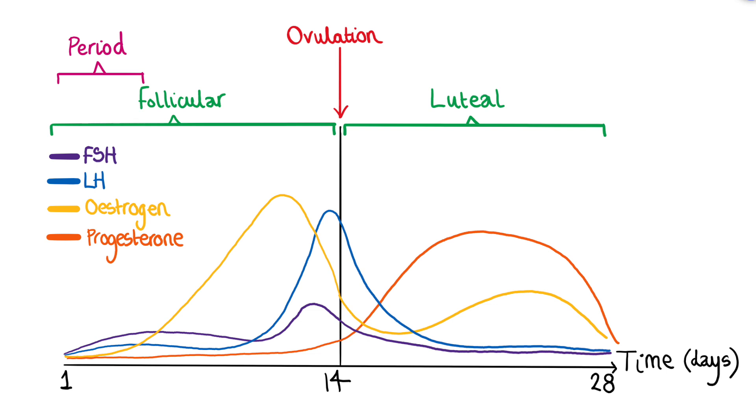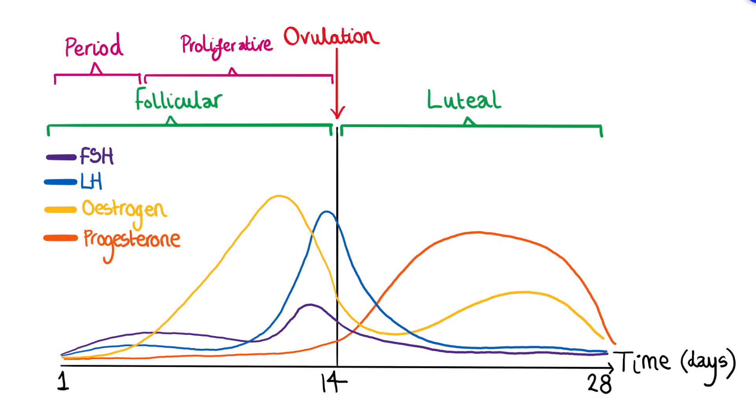That's the ovarian cycle. Now turning to the menstrual cycle — which refers to all of the changes in the uterus — it can be split into three phases, and it's tightly linked to the ovarian cycle. The first phase is your period, when you menstruate, which usually lasts about five days on average. The lining of the womb — specifically the stratum functionalis of the endometrium — will shed. This shedding is ultimately due to the decline in progesterone. At this point, levels of FSH, LH, and estrogen are all quite low.